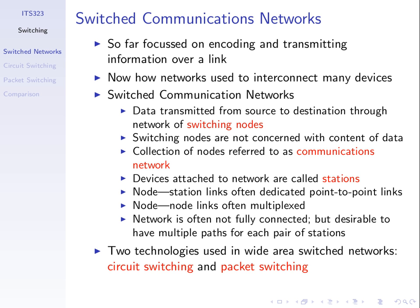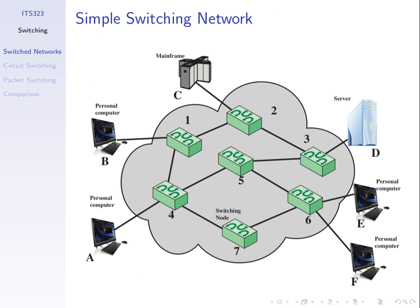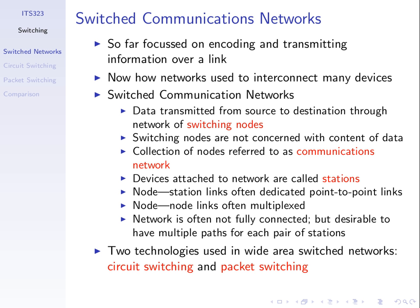In this example communications network, we have seven switching nodes — the circles with some links between them — just an example network, and six stations. A station is attached to one of the switching nodes, usually just one. Normally, the station-to-node links, like A to four, are dedicated point-to-point links. So computer A has a cable going into switch four, for example. All of the data that computer A generates and receives goes across that cable. No one else uses that cable — it's only for the communications to and from A.